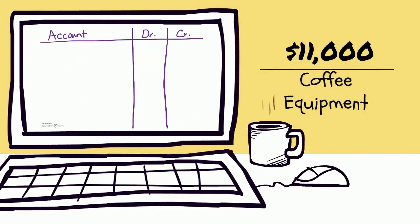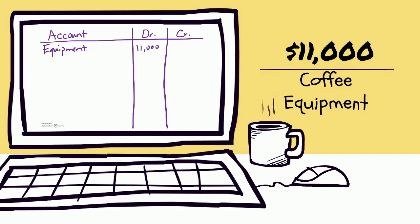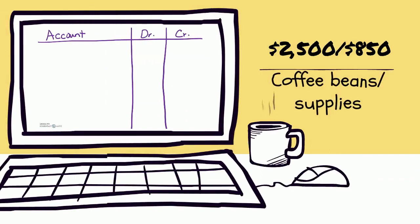We purchased coffee equipment for a total of eleven thousand dollars. This equipment is something we own — it's an asset and it's increasing — so let's write down an Equipment account, or even Coffee Equipment if we want to be specific. To increase an asset we debit it, so we're going to put an eleven-thousand-dollar debit here. We paid cash for it, so cash — an asset — is decreasing. To decrease an asset we credit it.